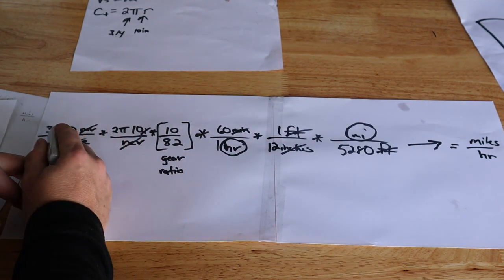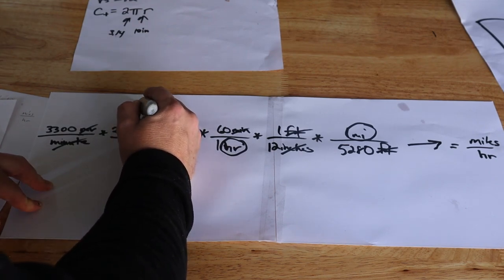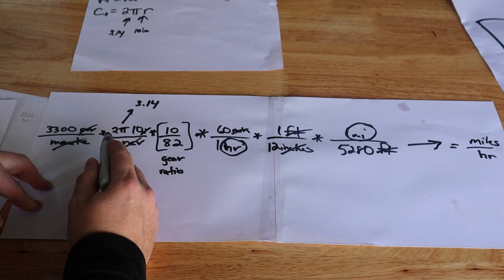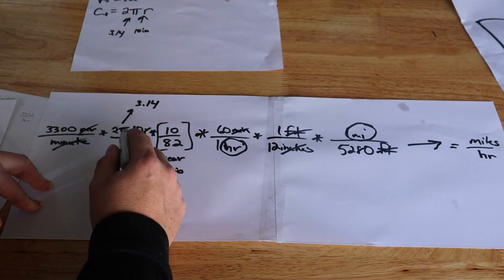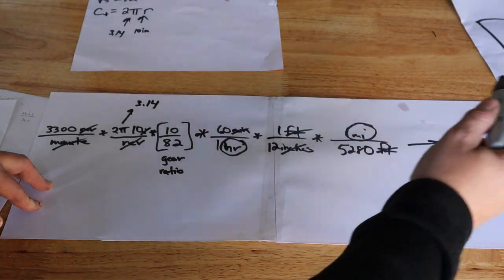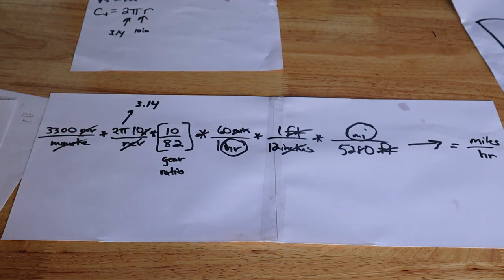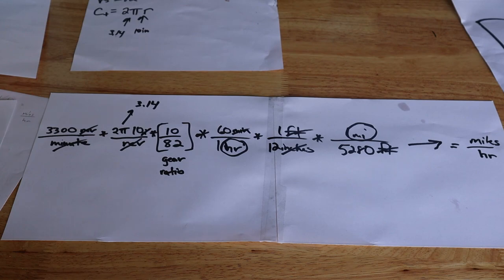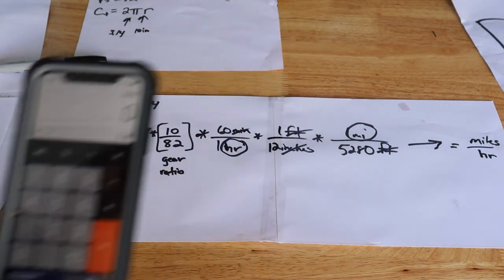So we multiply 3300 by 2 by π which is 3.14. We're going to go to two decimal places here which will be accurate enough for us. 3300 times 2 times 3.14 times 10 times 60 on the top, and on the bottom we've got 82 times 12 times 5280. Since those are big numbers and I'm not that great at math, I'm going to use a calculator because the calculator is a wonderful tool to use. I'm going to break out my phone here and do a little math.